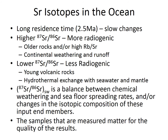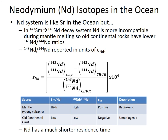Neodymium isotopes work similarly to strontium but the other way around. The epsilon notation — epsilon Nd — is very similar to the delta notation for oxygen isotopes: the sample value normalized to a standard representing the bulk earth today, expressed as parts per 10,000. The important thing is that neodymium has a much shorter residence time than strontium — on the order of hundreds of years — so we do see variations in its isotopic composition across the ocean.